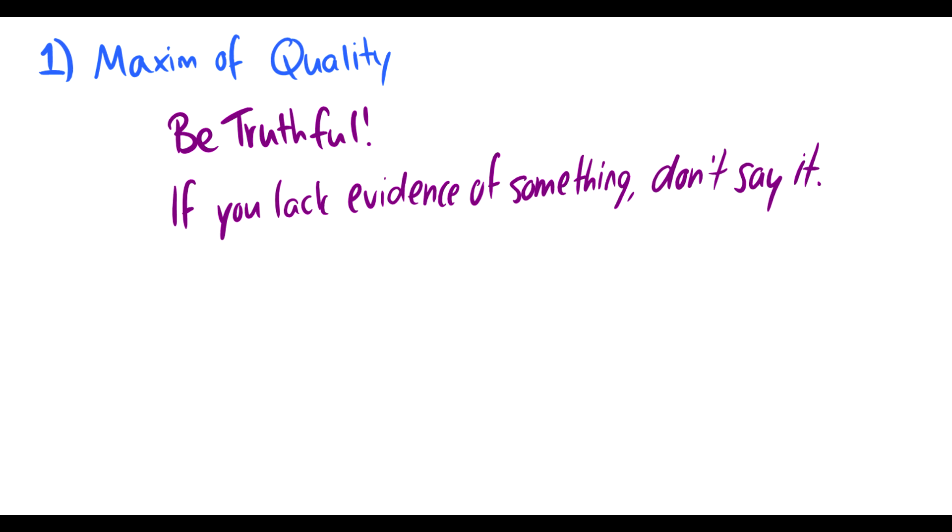So, there's four of them. We'll start off with one, the maxim of quality, and that just means be truthful, and if you don't have evidence of something, don't say it. So we're going to talk a lot about violations, and I would like to give a violation right here. It's easy to come up with sentences that follow them, but there's a lot of sentences in natural conversation that don't follow these maxims.